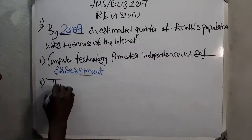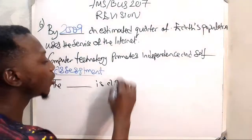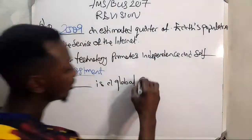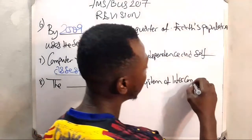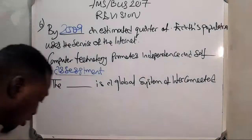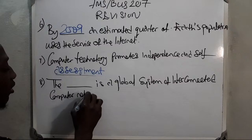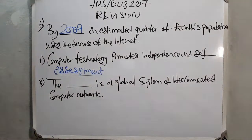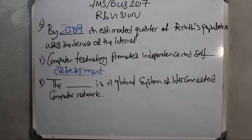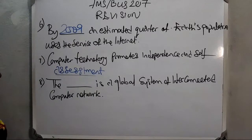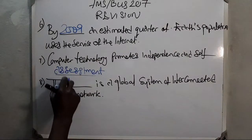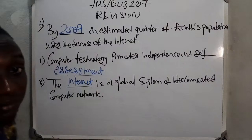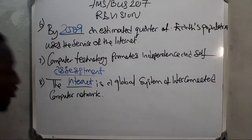Question eight: the internet is a global system of interconnected computer networks. Yes, thank you for that, Miss Olami Lecon — the internet is a global system of interconnected computer networks.